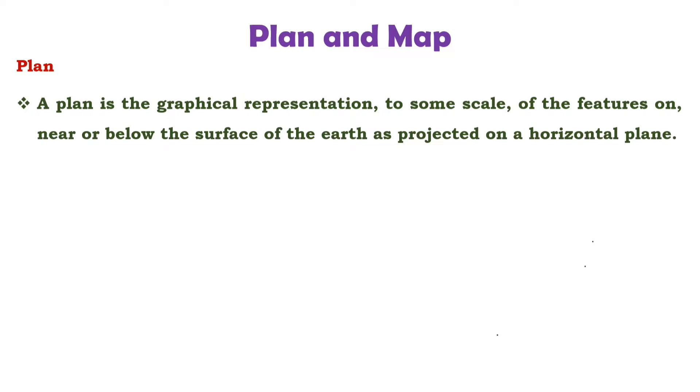A plan is the graphical representation to some scale of the features on, near, or below the surface of earth as projected on a horizontal plane. So any feature on, near, or below the surface of earth is projected on a horizontal plane and its graphical representation is called plan.